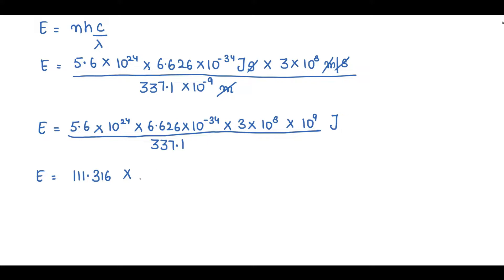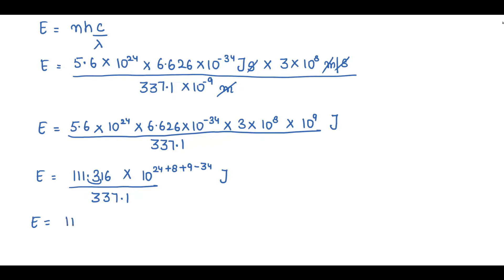For the powers of 10, since they are in multiplication we add them: 10 raised to power (24 + 8 + 9 − 34). The positive powers are 24 + 8 + 9 = 41, minus 34, giving 10 raised to power 7. To make the division easier, I'll displace the decimal one digit: 111.316 becomes 11.1316 into 10 raised to power minus 1, so the combined power is 10 raised to power (41 − 34) = 10 raised to power 7.